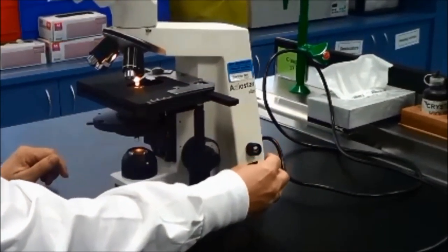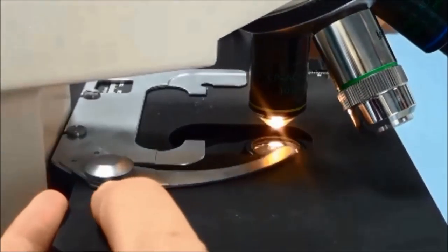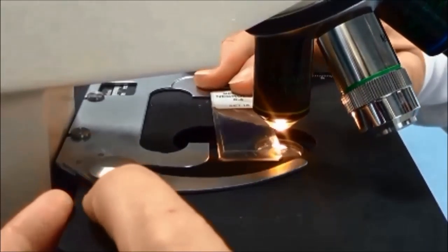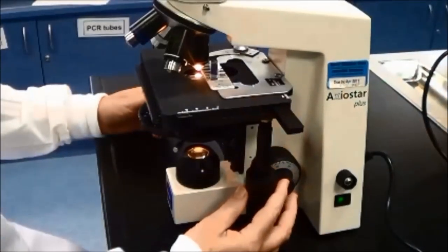Load the specimen onto the stage, holding it in place with the stage clip. Swivel the x10 objective lens, the yellow ring on the nosepiece, into place.